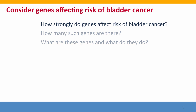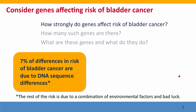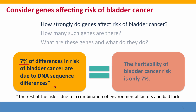The first thing is how much of the risk is due to genes. And here we can say it's not like height. In fact, only 7% of the differences in the risk of bladder cancer are due to DNA sequence differences. So we'd say that the heritability of bladder cancer is only 7%. This is important information because it tells us that we shouldn't waste our time studying the genes responsible for this small difference in risk. Instead, we should be paying attention to environmental factors and to random mutations — things that are not determined by the genes that we inherit.